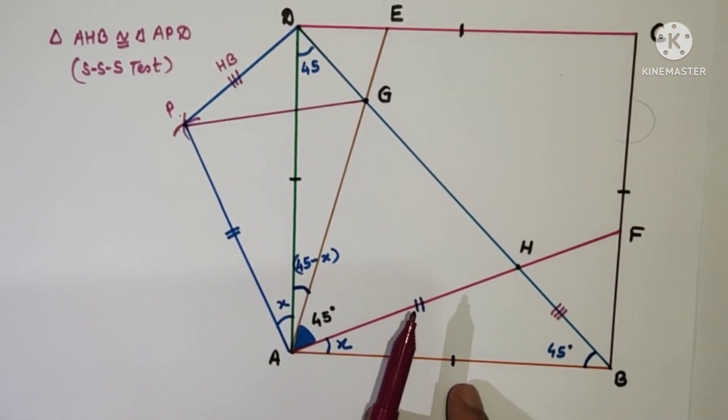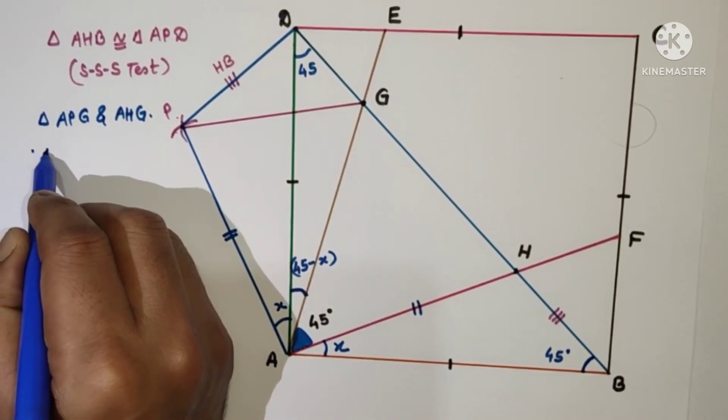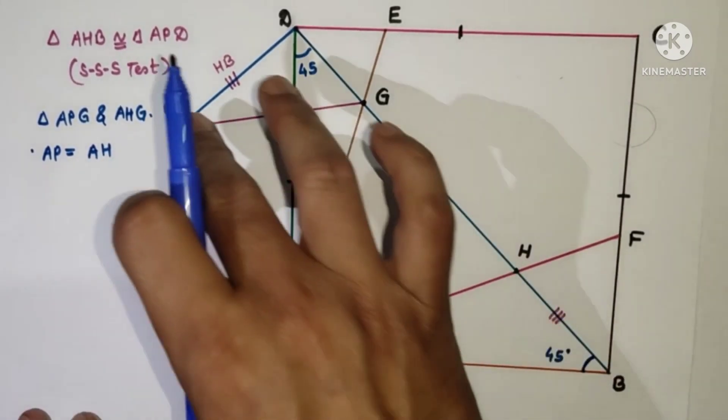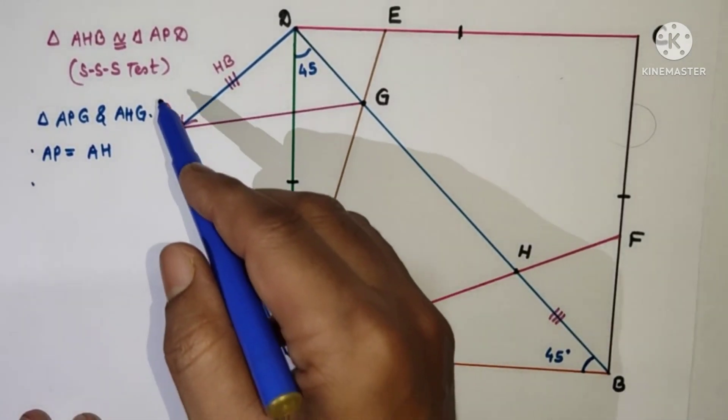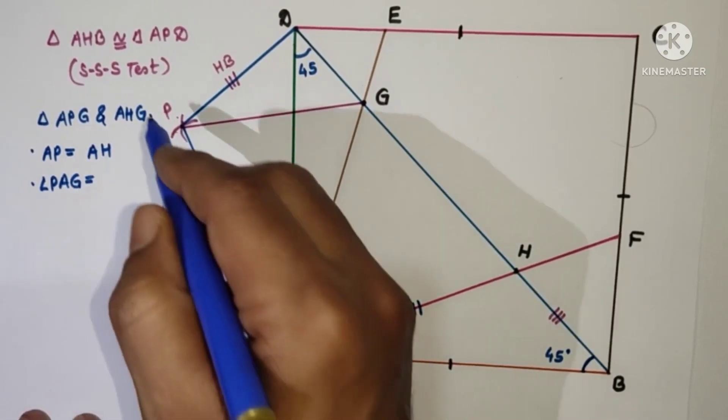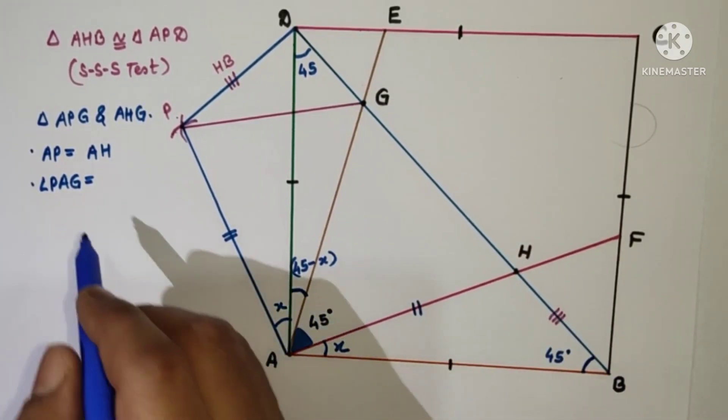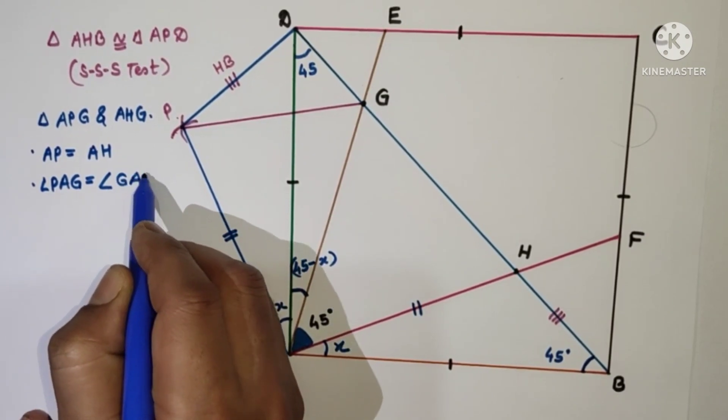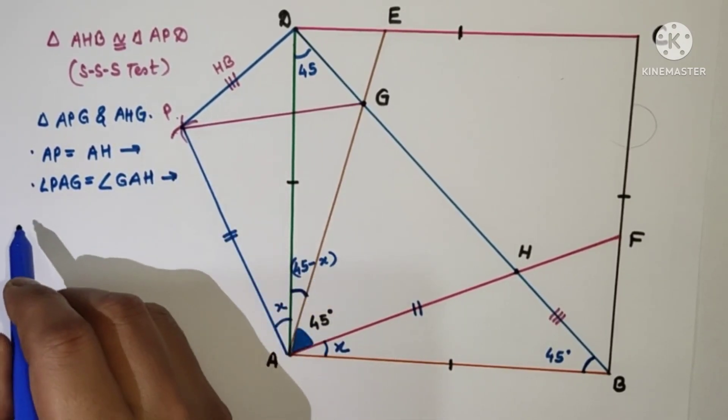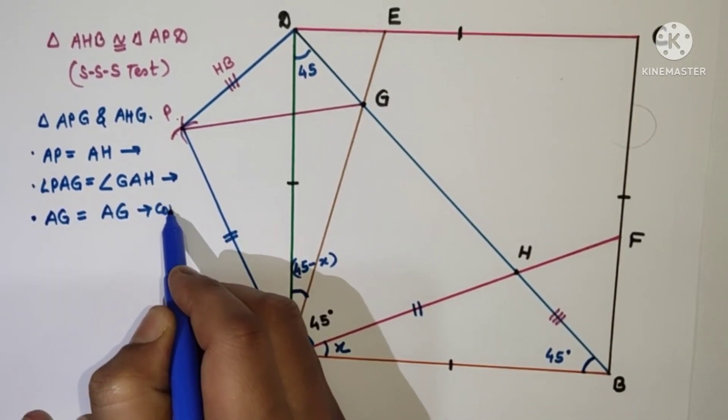Now join PG. Consider triangles APG and AGH. So AP is equal to AH by construction. Angle PAG is equal to X plus 45 minus X which is 45 and angle GAH is 45 given. And third part is AG is equal to AG, common side.